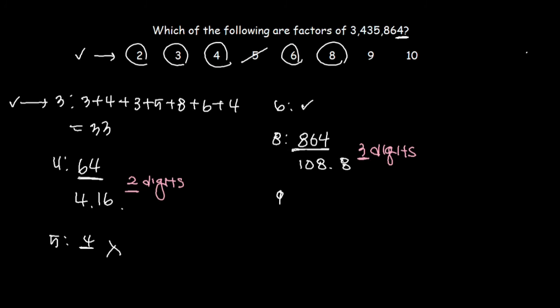Alright, back to the question. Let's move on to 9. If the sum of the digits is divisible by 9, it's divisible by 9. The sum of the digits, which we already found out, was 33, right? We already figured it out from here. The sum of the digits is 33. Is 33 divisible by 9? No, it isn't. We can't find anything that when it's multiplied by 9 gets 33. We can eliminate 9 from the answer choice.